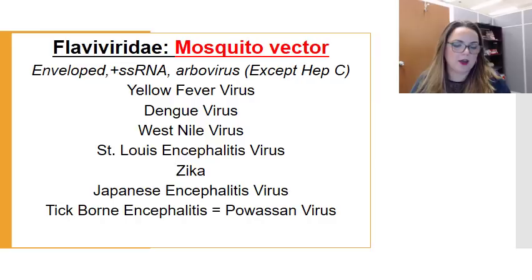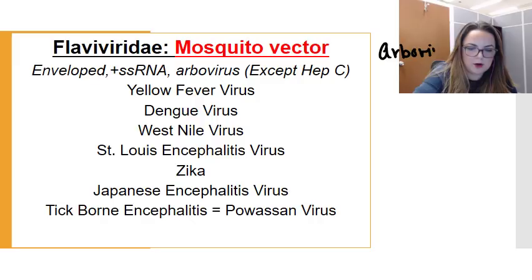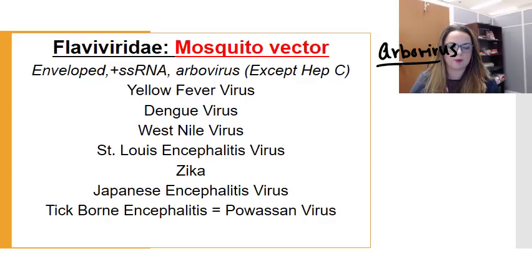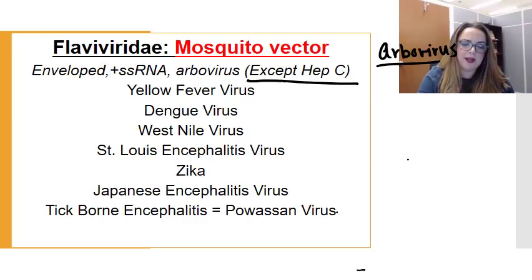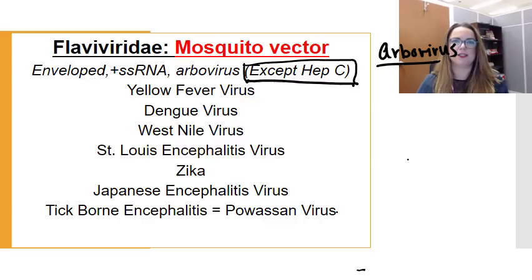They also have a mosquito vector, so that means they are arboviruses. Whenever we're dealing with an arbovirus, we already know that one of the best ways to avoid contracting it is to avoid the arthropod. Pretty much all of the flaviviruses are arboviruses except for hepatitis C. Hepatitis C, based on structure and replication, is a flavivirus, but it has this major difference in that it is not an arbovirus.